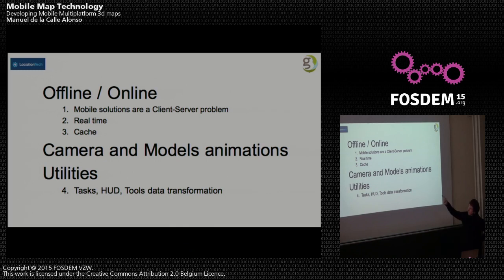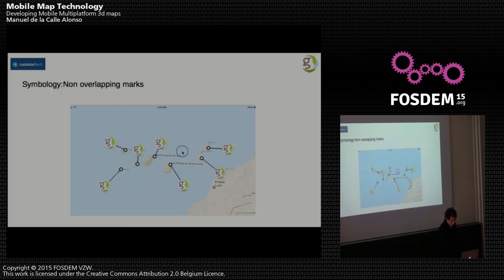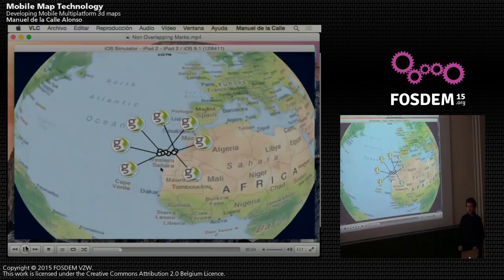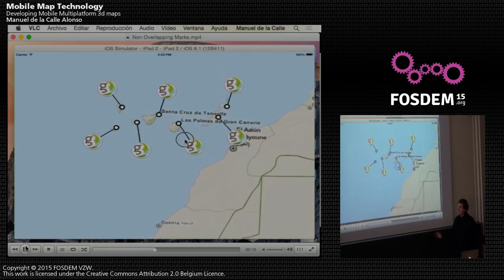We can manage the cache very easily. We have camera and model animations. We have different utilities for developing the application — for example, tags. We have developed a HUD for glasses and many tools to transfer data. One of the latest things we've done is a symbology system — for example, markers on iOS that never overlap between them. It's an example of advanced symbology.